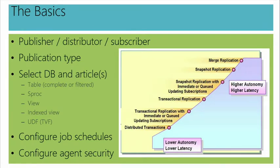I could have a complete or filtered table as an article, but there are other objects such as stored procedures that produce rows, or a view. Whenever I pick an object with dependencies like a view or stored procedure, the underlying objects come along with it. In the process of configuring replication, I have to determine a schedule for how frequently propagated updates will go to the subscriber. Agent services are going to have to communicate with each other, so whether you use code or the GUI, you'll need to configure agent security. These are the basics of replication.